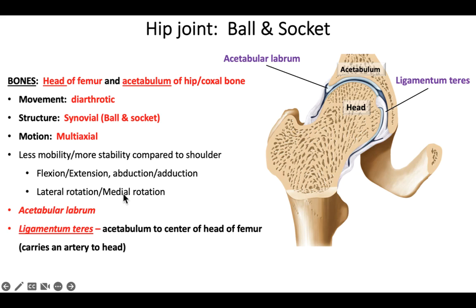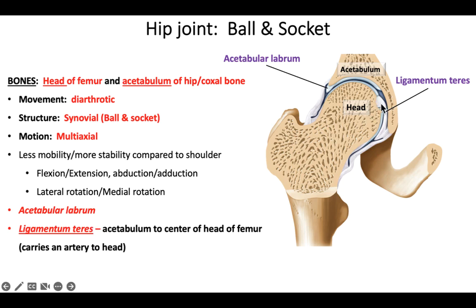The hip allows the same motions as the shoulder: flexion and extension, abduction and adduction, medial rotation and lateral rotation. There's an acetabular labrum — a fibrocartilaginous lip around the edge of the socket. There's also an intracapsular ligament called the ligamentum teres. The word teres means cylindrical. This ligament attaches to the head of the femur and helps hold it inside the acetabulum. An artery also runs with it, entering the head of the femur to nourish it.